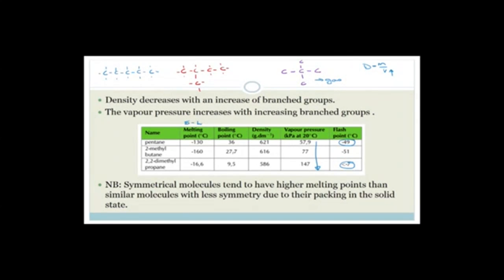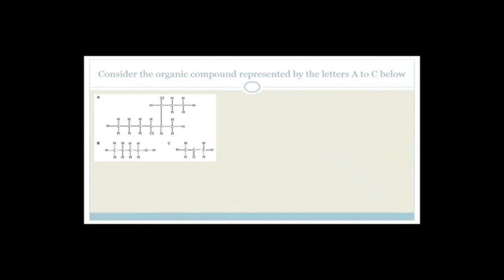Symmetrical molecules tend to have a higher melting point than similar molecules with less symmetry, due to packing in the solid state. If you've got nice symmetrical molecules, they pack neatly and close together, giving them a higher melting point. Now, before we carry on with reactions, let's go through some organic chemistry exam paper questions on the content we've covered so far — naming, functional groups, and physical properties.